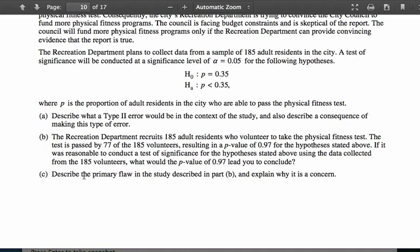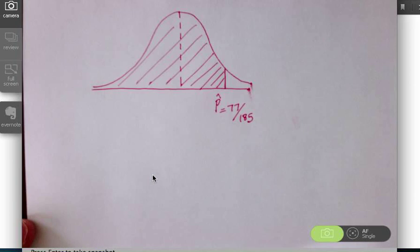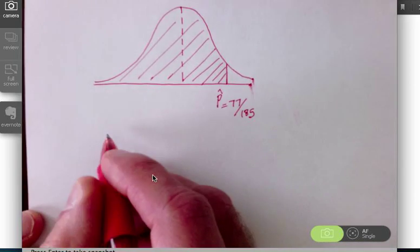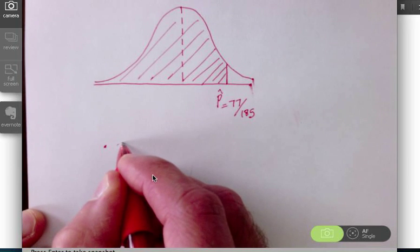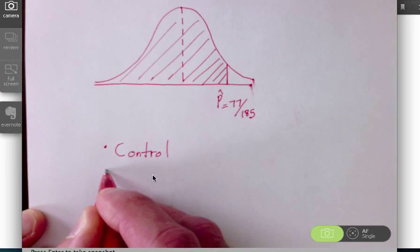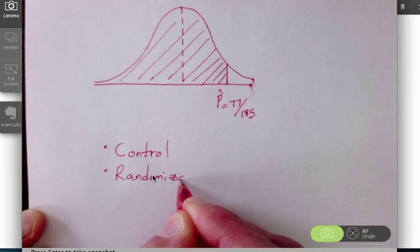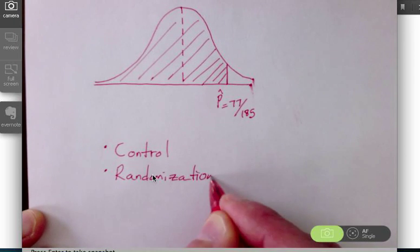So lastly then, in Part C, describe the primary flaw in the study described in Part B and explain why it is a concern. That primary flaw, remember we were talking about something in class today. When a study or experiment is designed, the most important characteristics of that experiment are you want to make sure that your experiment has control, you need randomization, and you need replication.